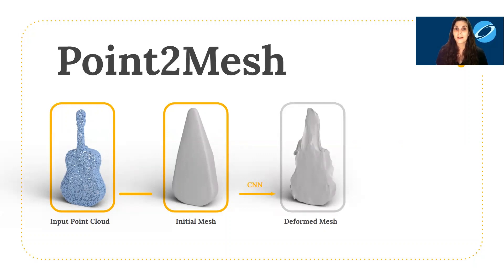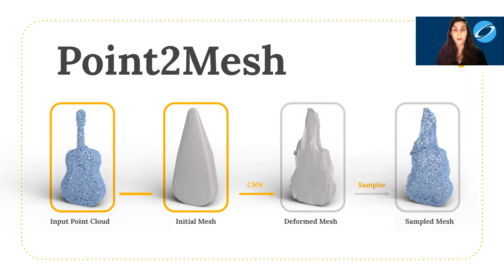The deformed mesh is then passed to a differential sampler resulting in a sampled mesh. We calculate the distance between the sampled mesh and the input point cloud, which is used to update the CNN weights. We iteratively perform this update where the deformed mesh in the next iteration should more closely approximate the input point cloud.